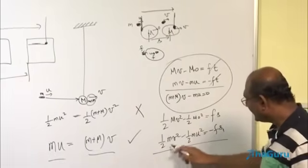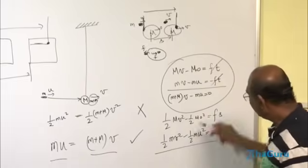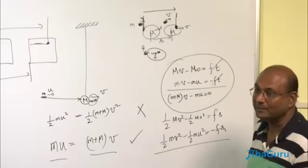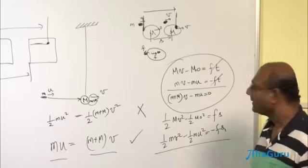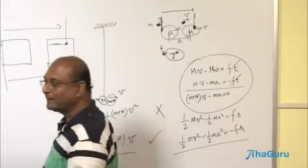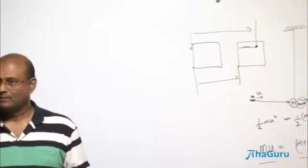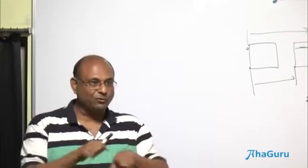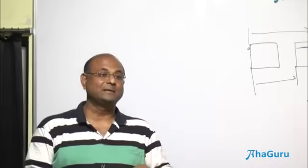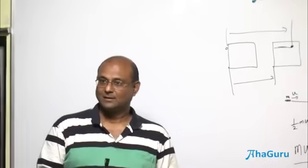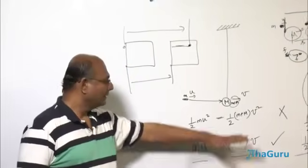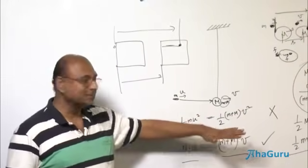If we add, we will get this is the final energy. This is the initial kinetic energy. But this unfortunately does not become 0. This becomes 0 because time for the bullet is equal to time for the block. Bullet and block have the same time. The force acts for the same time. But the force does not act over the same distance. So what can we conclude? We can conclude momentum is conserved. Energy is not conserved.